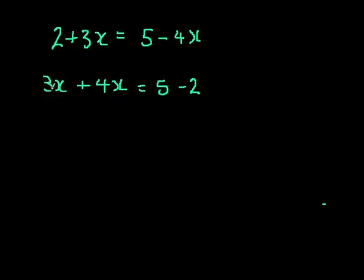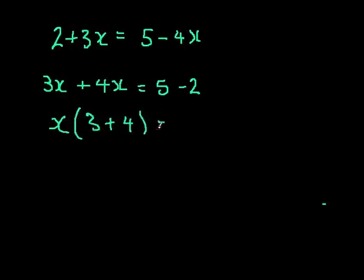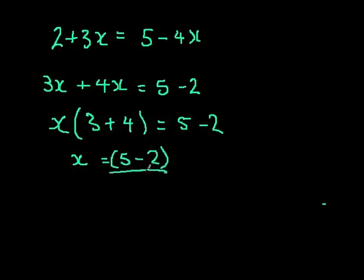As we covered in previous videos on factorising, we can factorise an x from 3x plus 4x. Taking x out: x times (3 plus 4) equals 5 minus 2. Now we divide both sides by (3 plus 4), so x equals 5 minus 2 divided by 3 plus 4. That's the answer — we could simplify and work out the values, but this shows the method.